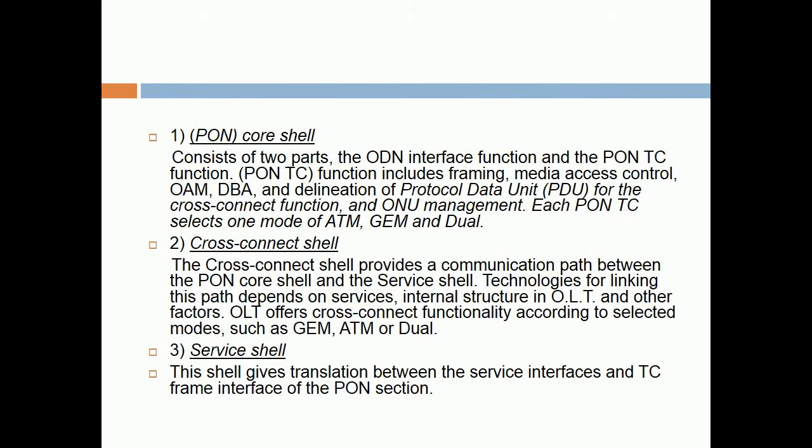One PAN Core Shell consists of two parts: the ODM interface function and the PANTC function. PANTC function includes framing, media access control, OAM, DBA, and delineation of protocol data unit PDU for the Cross Connect Function, and ONU management. Each PANTC selects one mode of ATM, GEM, and DUA.